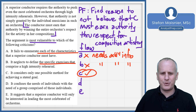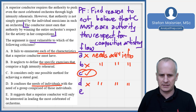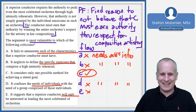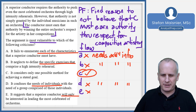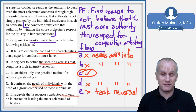Choice D — confusing the needs of individuals with the need of the group — needs additional information and doesn't pertain directly to the conclusion about authority. Choice E — suggesting a superior conductor will only be interested in leading the most celebrated orchestras — is simply not true; the argument says the conductor requires authority to push even the most celebrated orchestra, not that she'll only lead that type. That's a task reversal — it's not a flaw inherent in the argument. Choice C is the correct answer. This is how you can specifically or broadly predict flaws to address this task on critical reasoning questions. Practice these problems on your own to improve on this aspect of the verbal section.